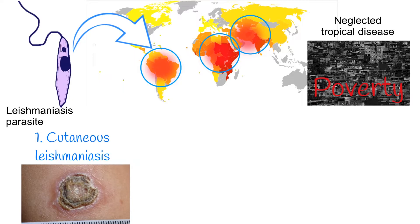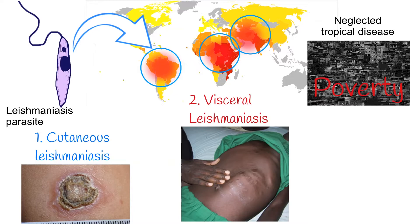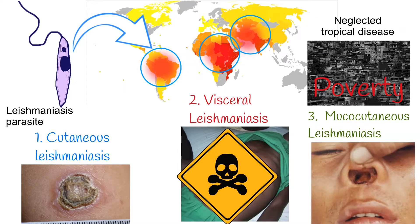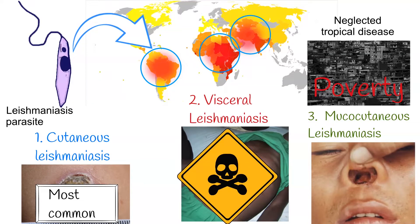There are three main forms of leishmaniasis in people: cutaneous leishmaniasis, visceral leishmaniasis, and mucocutaneous form. The visceral form is the most dangerous and almost always causes death of the infected person if left untreated, while the cutaneous form is the most common but with milder symptoms.